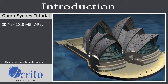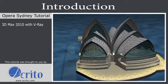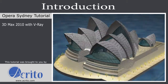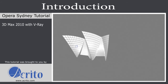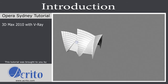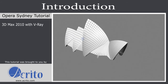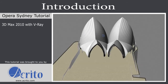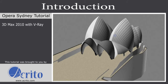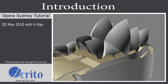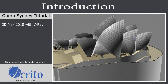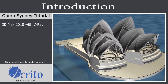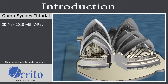We will start by modeling all parts: first the outer shell, then the second outer shell, then the third outer shell. Then we will model the base, then we will add the remaining details. Afterwards we will add textures and create materials.